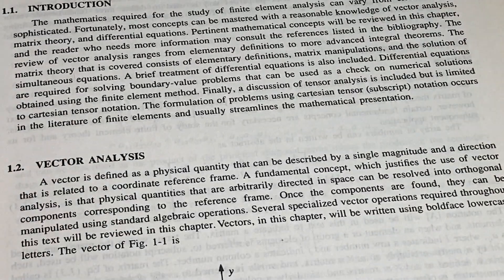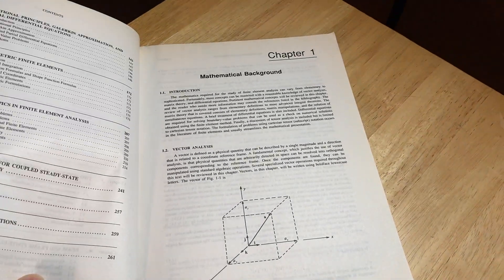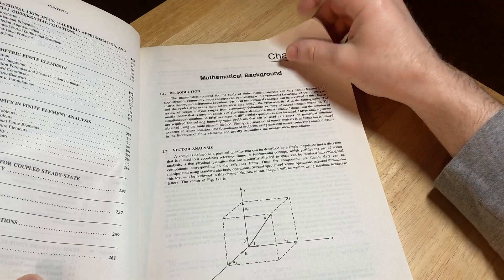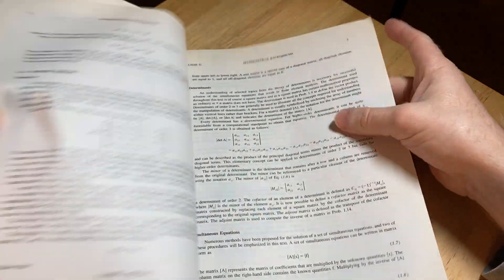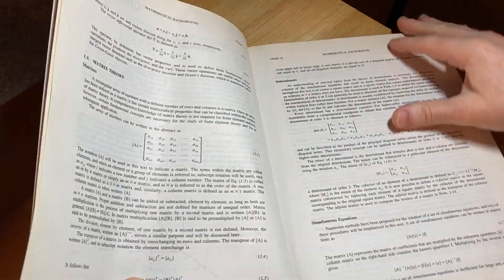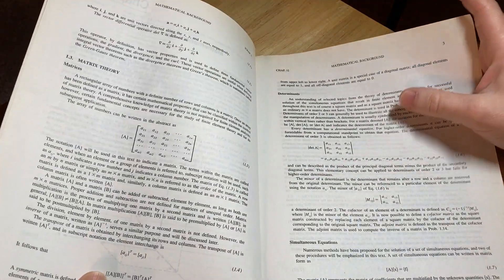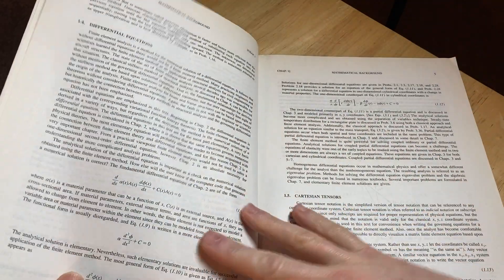So it talks about vector analysis here. There's a cube or some type of rectangular object. The matrix theory. Differential equations, Cartesian tensors. It's just reviewing a bunch of math. Mathematical background.